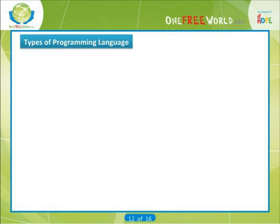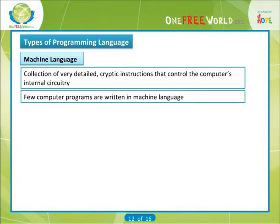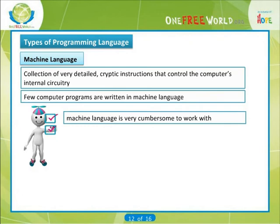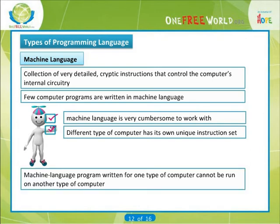Moreover, there are many different languages that can be used to program a computer, but the most basic of these is machine language — a collection of very detailed, cryptic instructions that control the computer's internal circuitry. This is the natural dialect of the computer. Very few computer programs are actually written in machine language, however, for two significant reasons. First, because machine language is very cumbersome to work with, and second, because every different type of computer has its own unique instruction set. Thus, a machine language program written for one type of computer cannot be run on another type of computer without significant alterations.